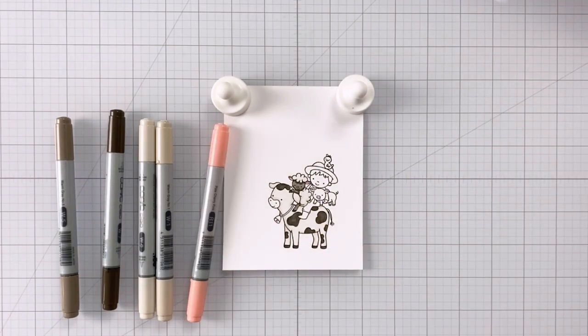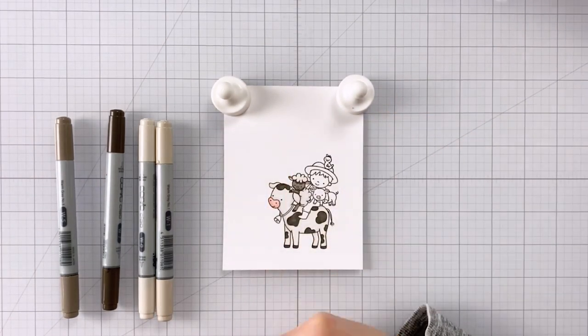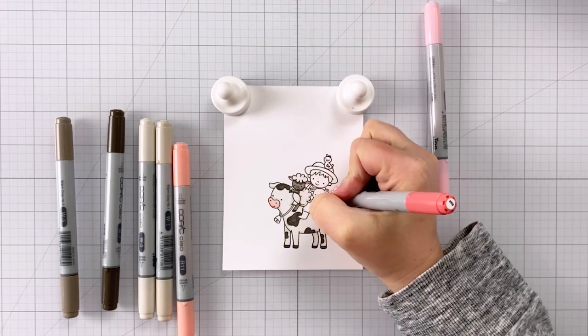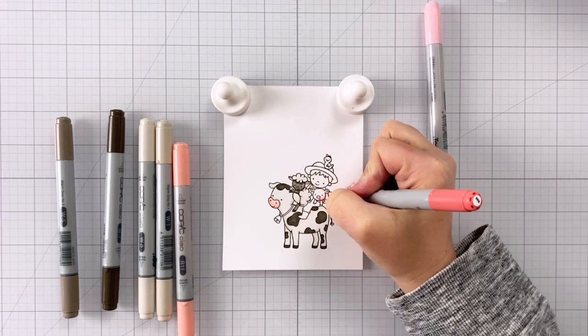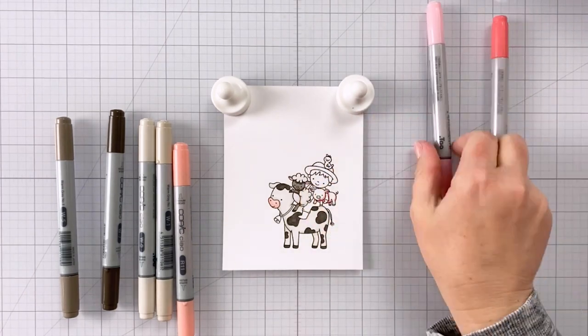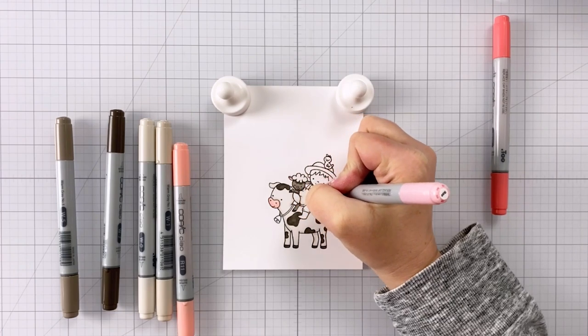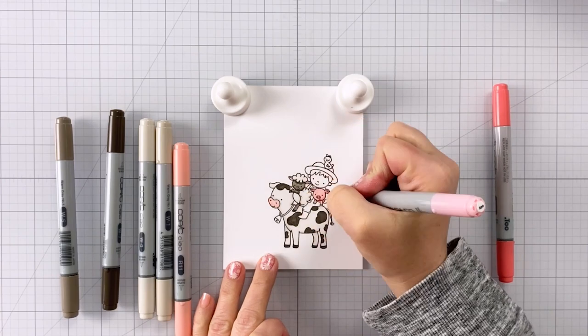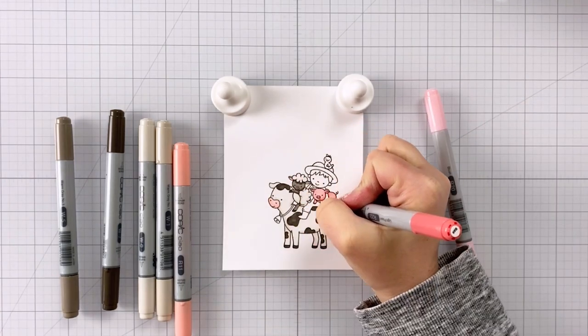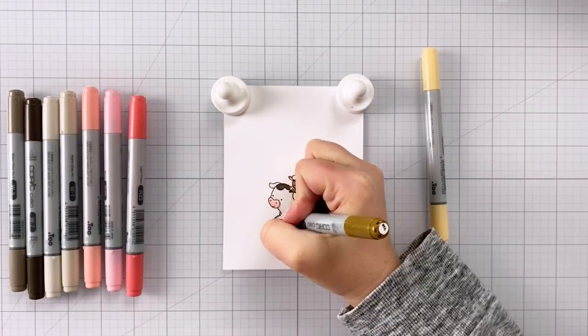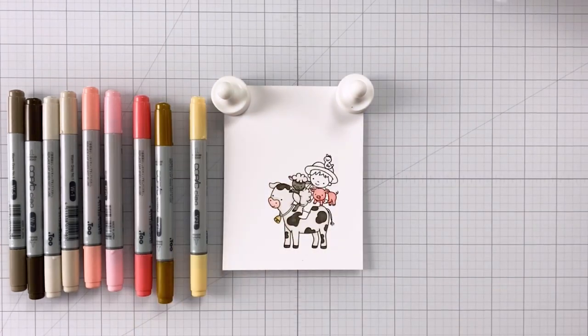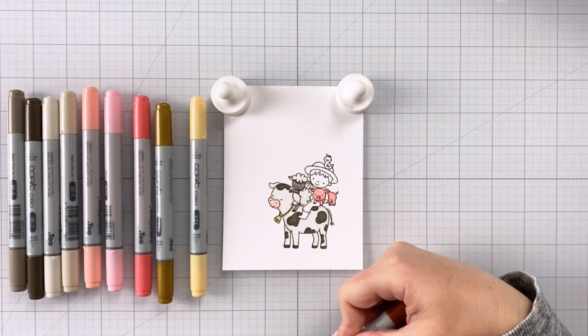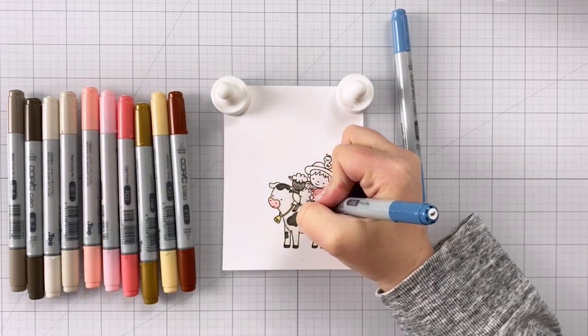Once I have that done, I can do my cute little pig. I love the little pig in this image. It's so cute. And I'm using R20 and R22, which are kind of like peachy pink colors. And I find that those work really well for a little pig in any kind of scene.